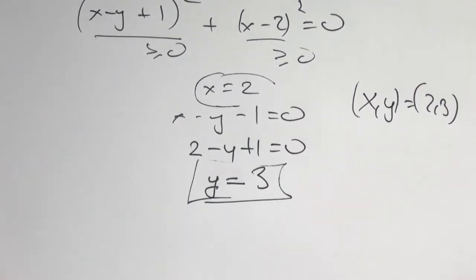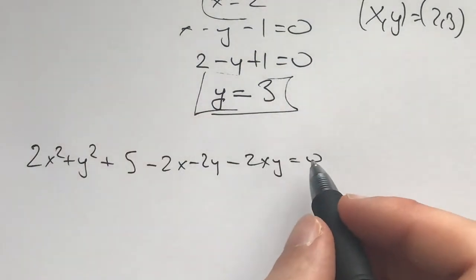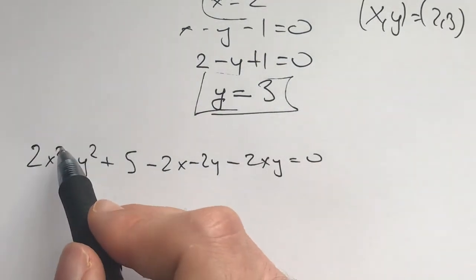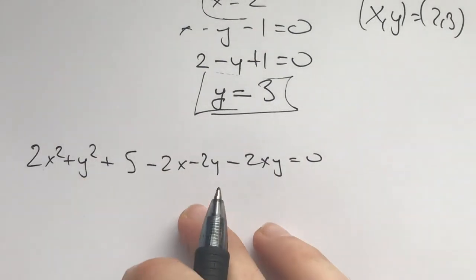But I want to show you a different type of argument. What we had at the beginning was this thing right here. This is also a quadratic in x and a quadratic in y. It doesn't matter which one you look at.